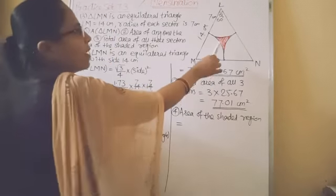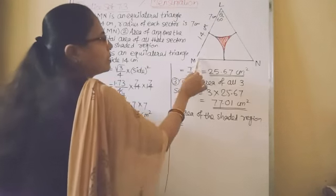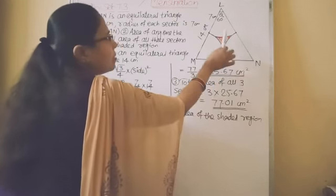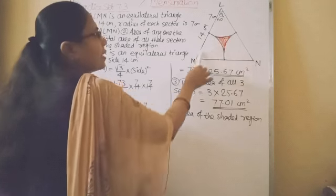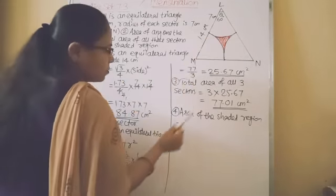That means to find out the area of this shaded portion, from area of this triangle L, M, N, we have to subtract area of all these 3 sectors. Then we will get the area of this shaded portion.